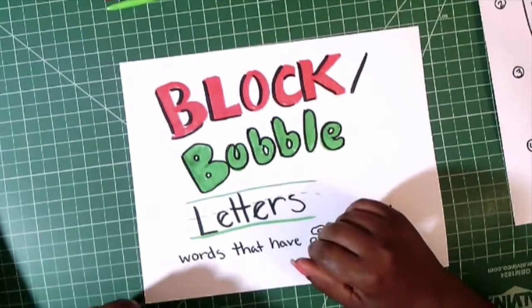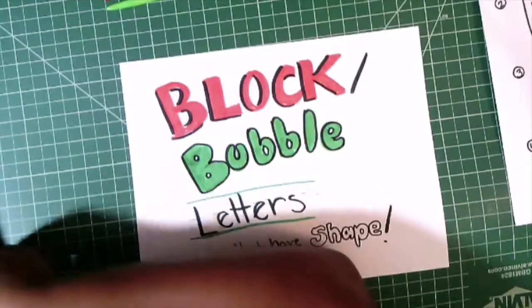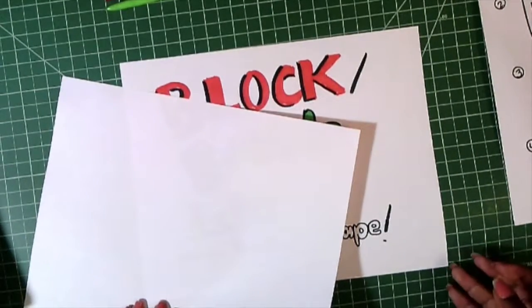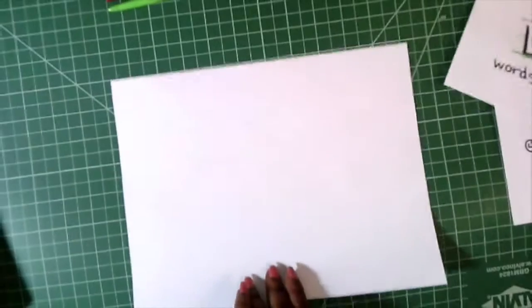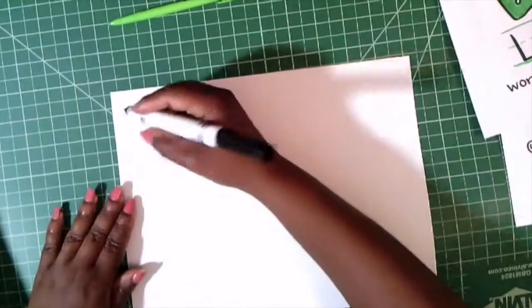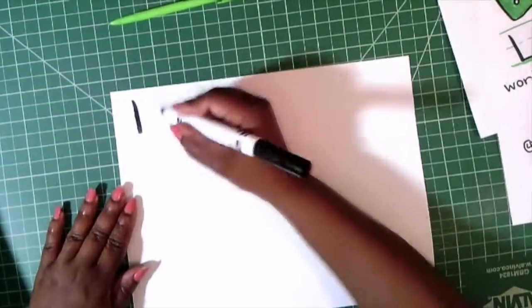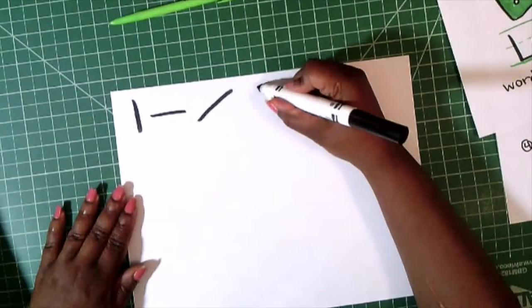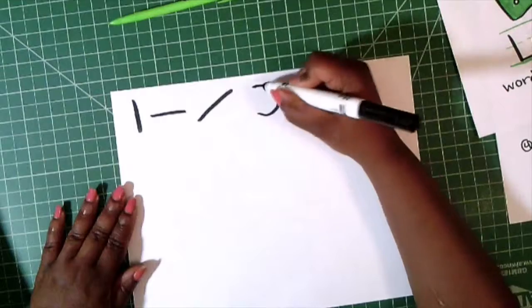then you can actually make any block or bubble letter. If you look at letters in the English alphabet, they are made up of a combination of mostly straight vertical lines, straight horizontal lines, diagonal lines, and there are some curves in there as well,